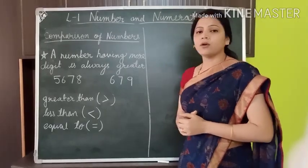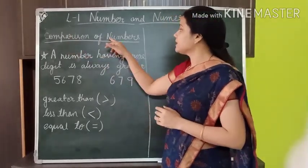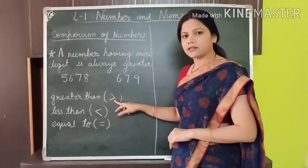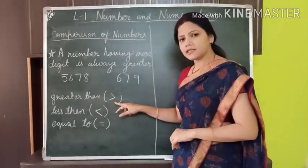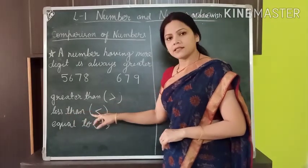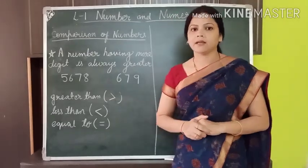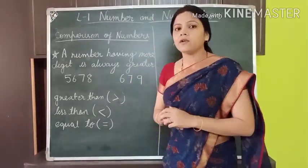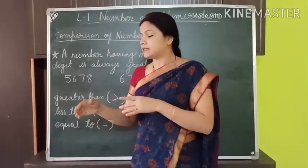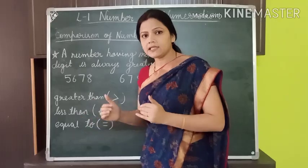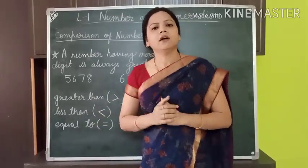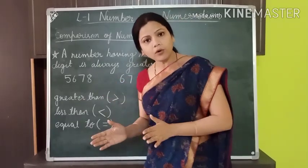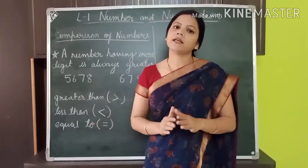Let us start with the topic of comparison of numbers. We can compare numbers by using three signs: greater than, less than, and equal to. For comparison of numbers we need two different numbers, and then we will check whether the first number is greater than, less than, or equal to the second number. The first thing to keep in mind is that a number having more digits is always greater than the other number.